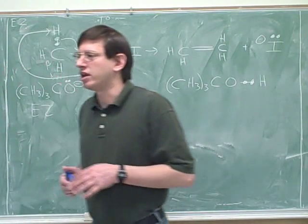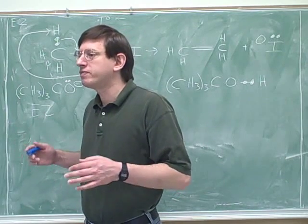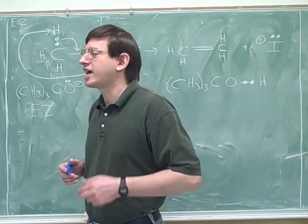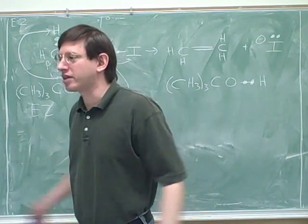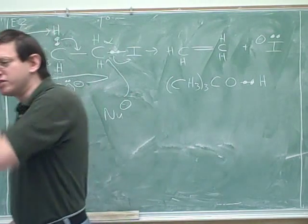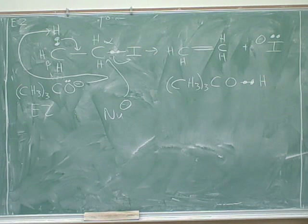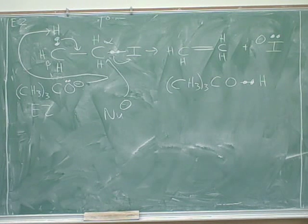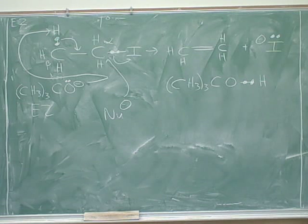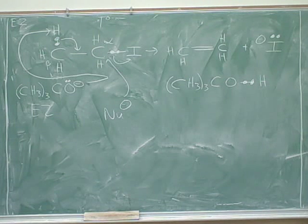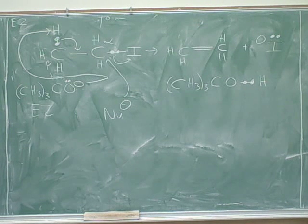Why is the leaving group especially important for SN1? Because it's just about the only thing in the rate determining step. There are two steps in SN1 — first the leaving group leaves, then the nucleophile joins. But the hard step is the leaving group leaving, because that forms the carbocation. It's easy for the nucleophile to join afterward because that gets rid of the carbocation. The first step is the slow, rate determining step, so the quality of the nucleophile is not a big issue for SN1 or E1. You can even use a weak nucleophile.